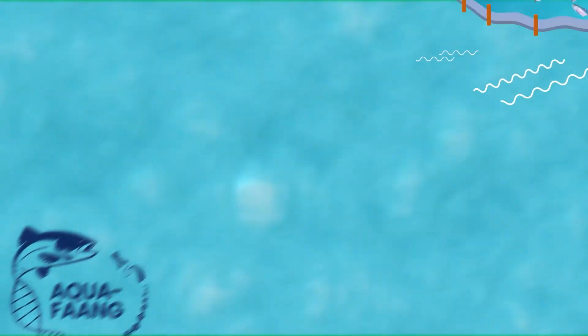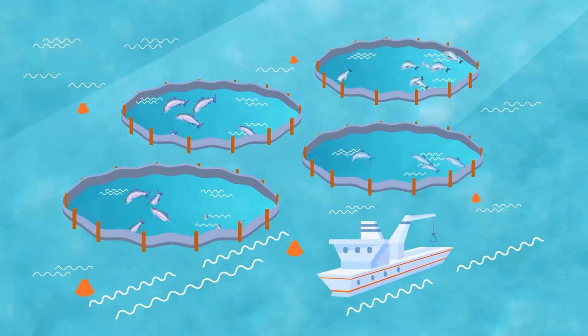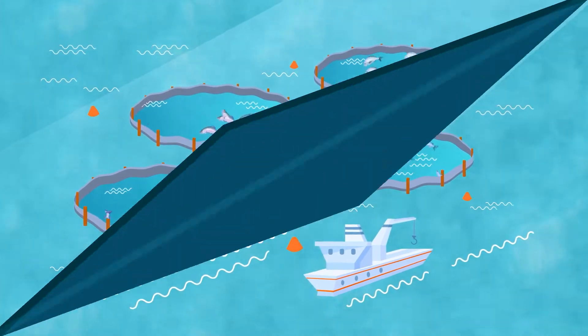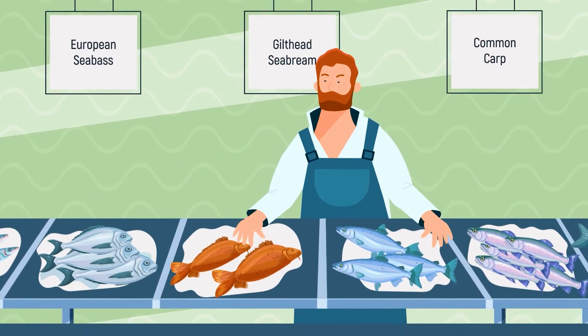Aquafang is an EU-funded research project that aims to support the growth and sustainability of aquaculture, focusing on the six most farmed fish species in Europe.